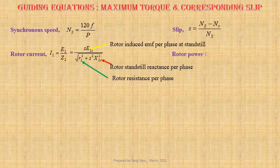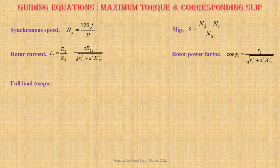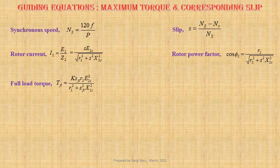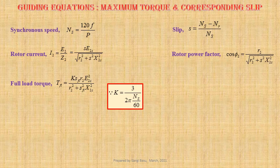Expression for rotor power factor cos phi 2 equals to R2 divided by root over R2 squared plus S squared X2S squared. Expression for full load torque TFL equals to K times SFL times E2S squared divided by R2 squared plus SFL squared X2S squared, where K is a constant equal to 3 divided by 2 pi times Ns by 60.